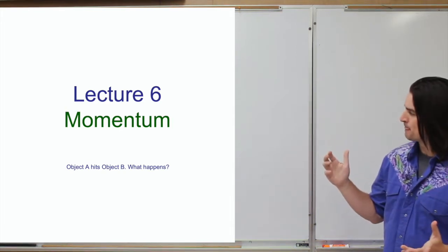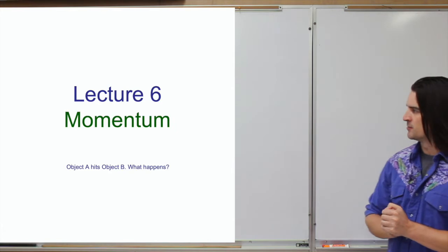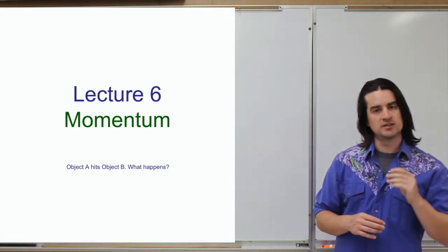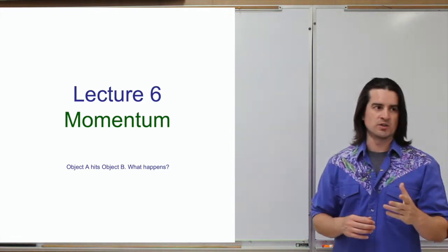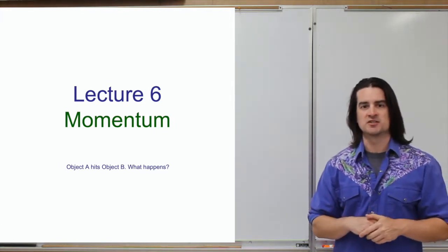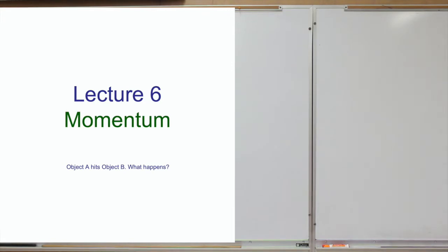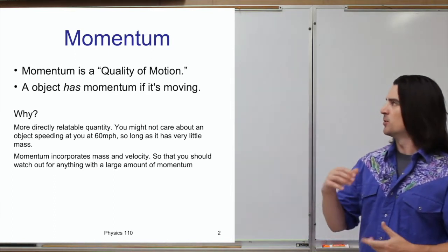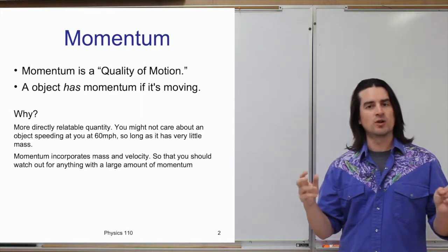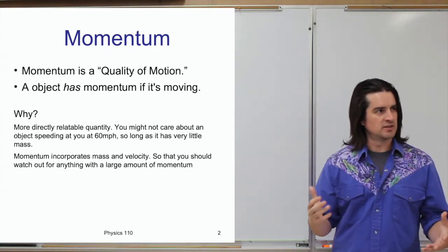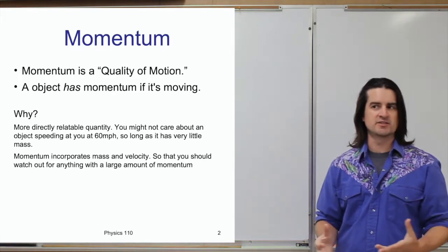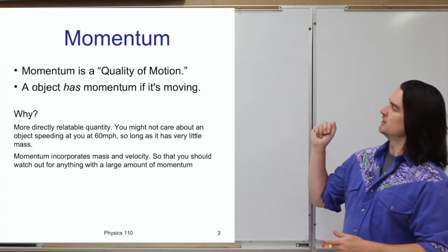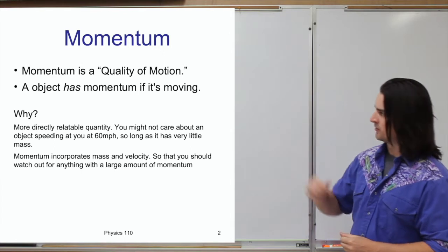That's what today's lecture is going to be all about. Momentum is a very useful concept in a number of different ways, but by and large in physics it is very useful when it comes to analyzing collisions — like what happens when one object hits another. Generally speaking, momentum is something sometimes called a quality of motion, meaning it's a property that an object has due to the fact that it's in motion. So if an object is moving, it has momentum; if it has momentum, it's moving.